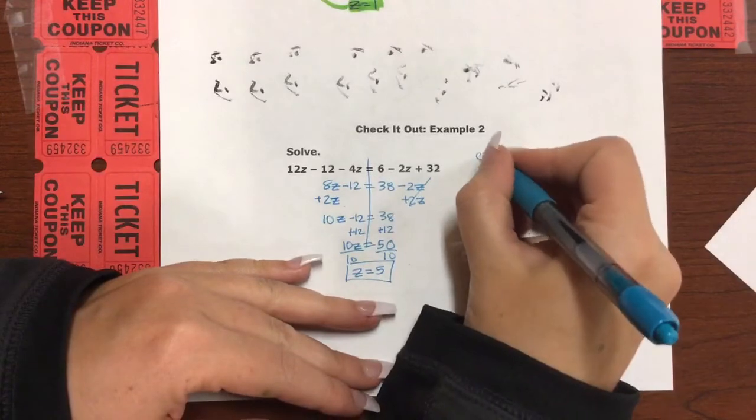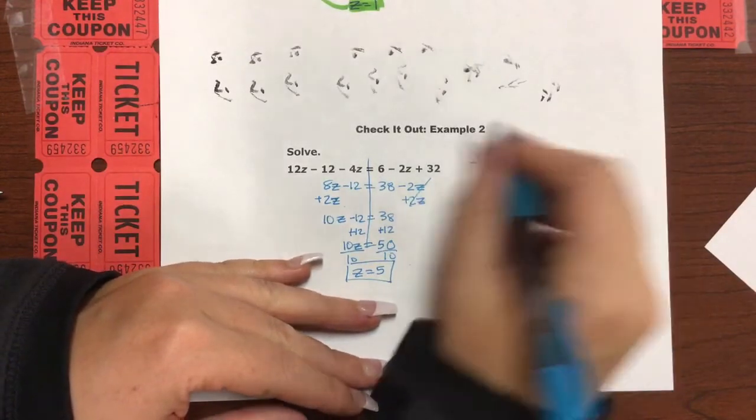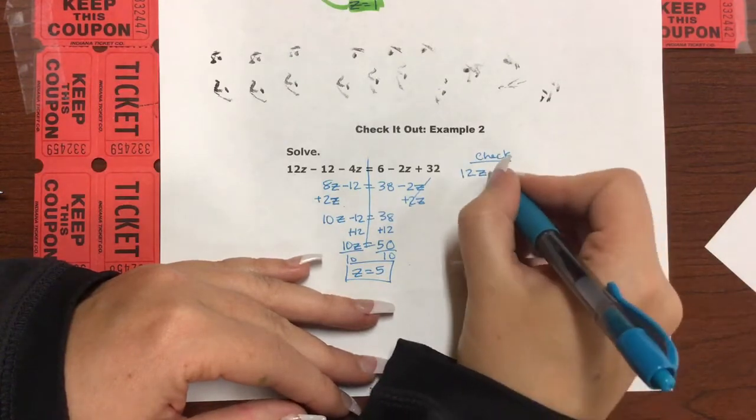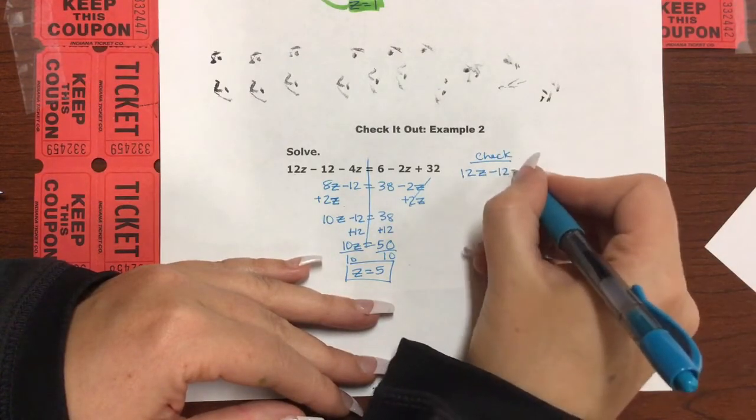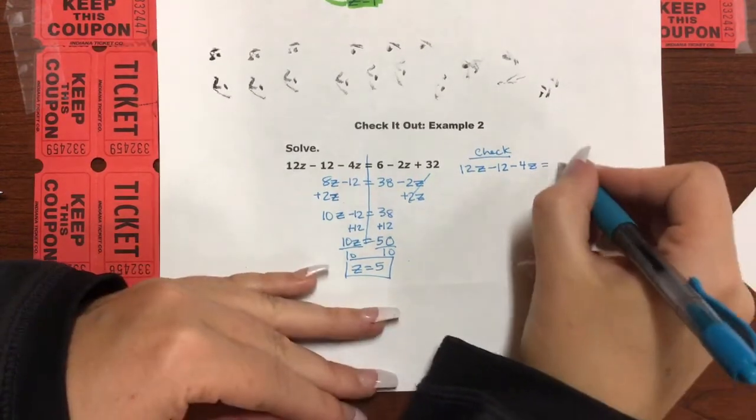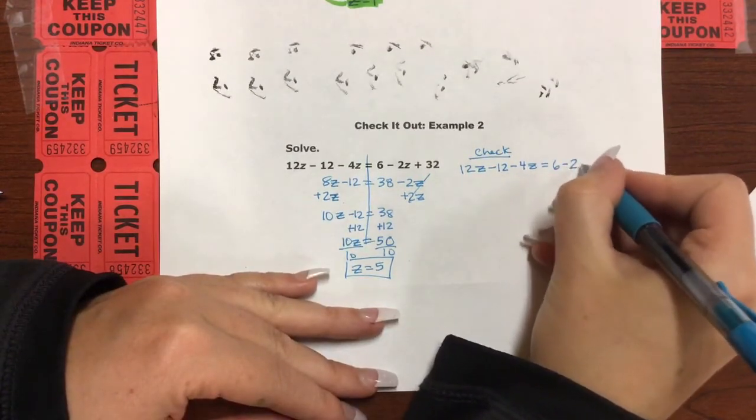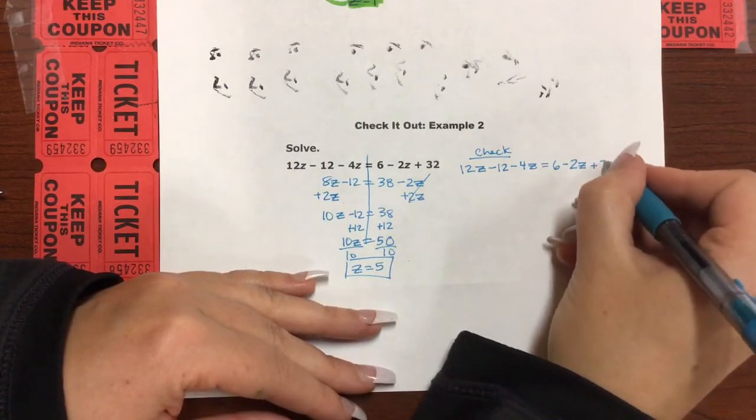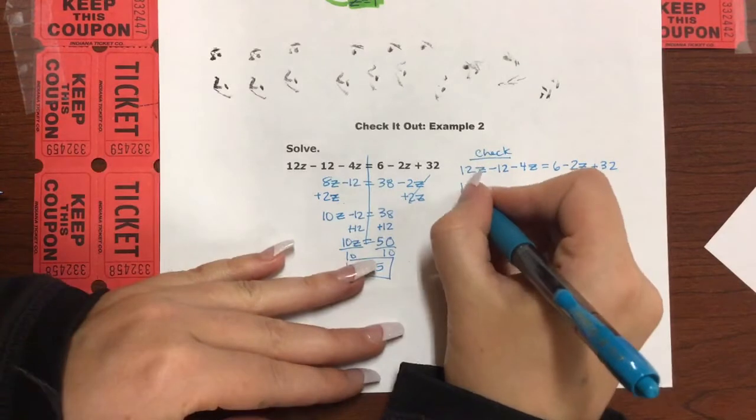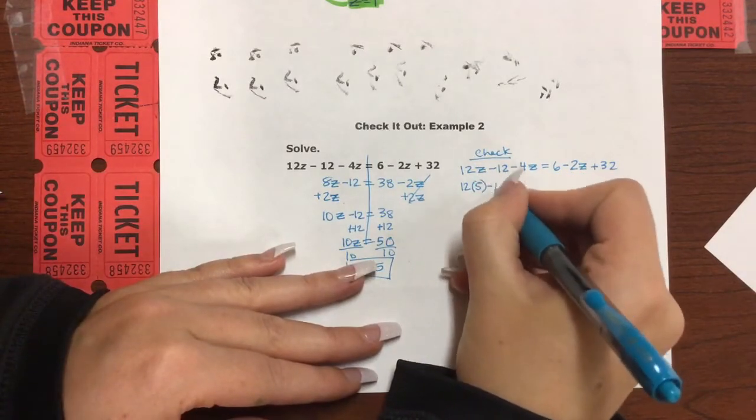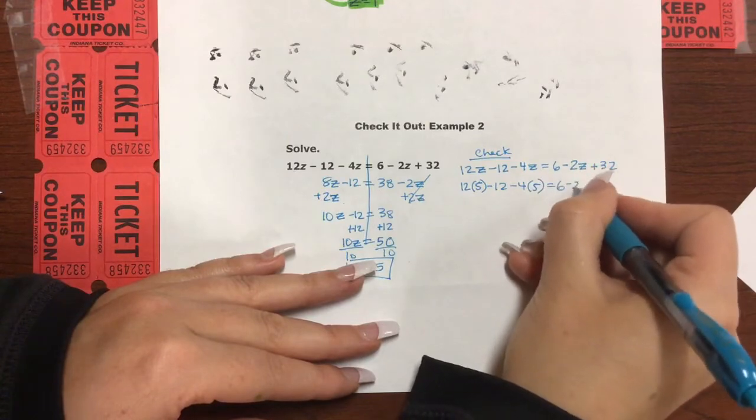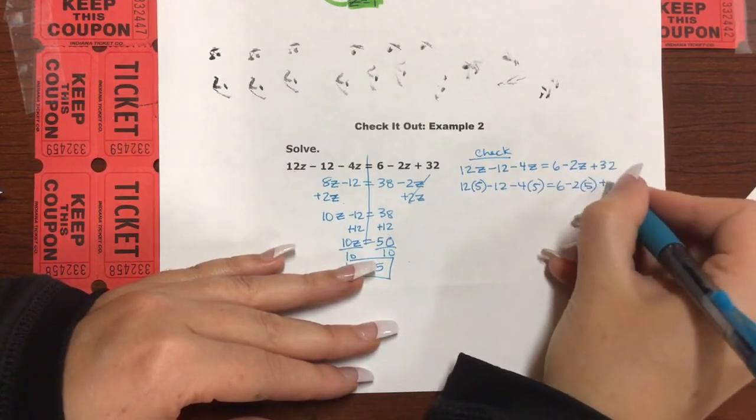And then we are going to check our answer by hand. We are going to write out this entire equation. Okay, we are doing it right here. Writing it out. Okay, we're going to plug in 5 for z.